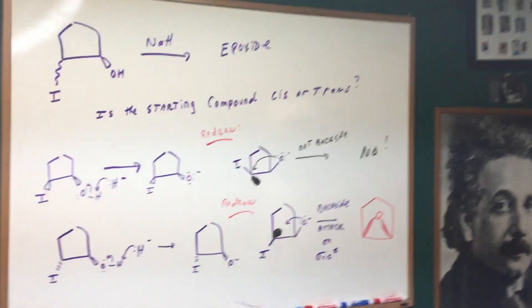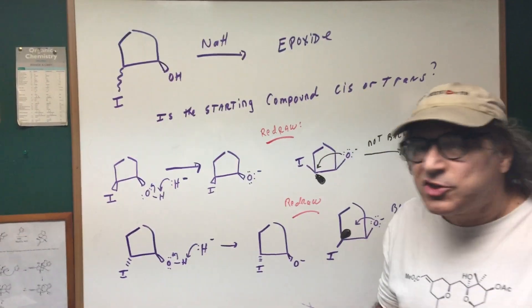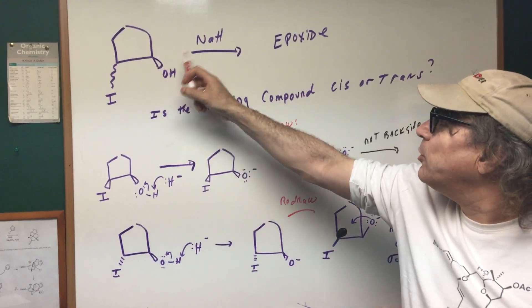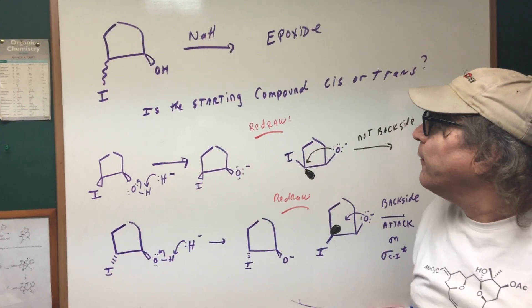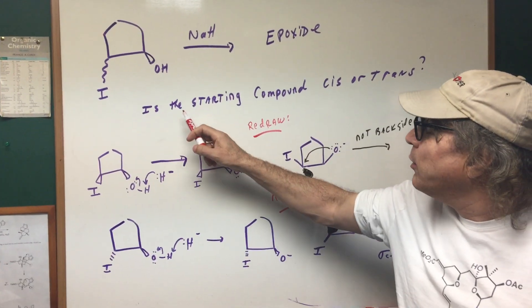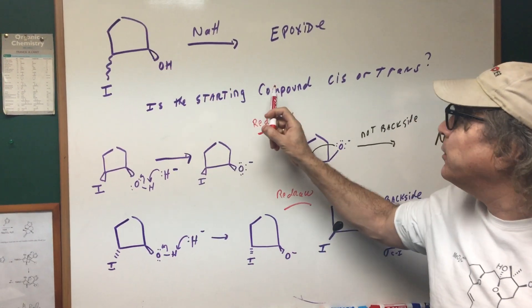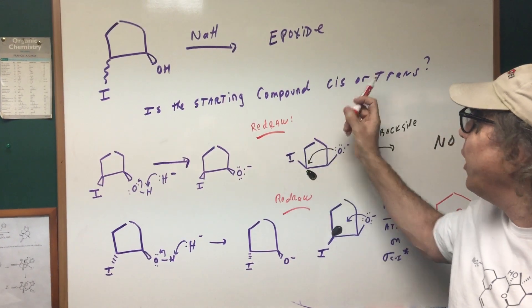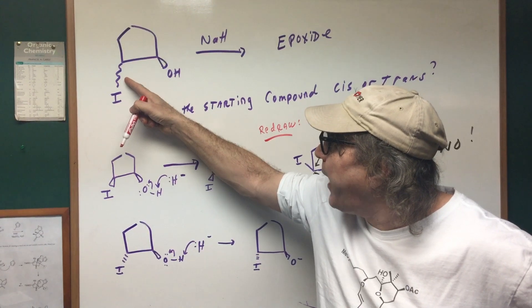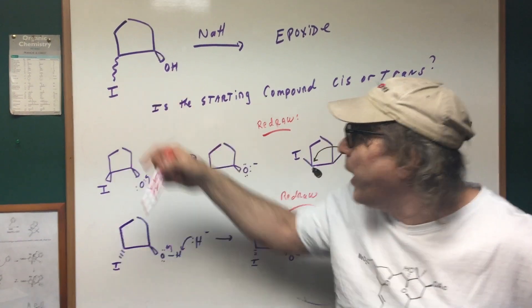Here's a problem I designed for you. This is for the student that really wants an advanced treatment. I gave you a molecule and I say I treat it with NaH and it's going to form an epoxide. But I want to know is this starting compound, is it cis or would it be trans? And that's what the squiggly mark means, that this could be either a dash or a wedge.